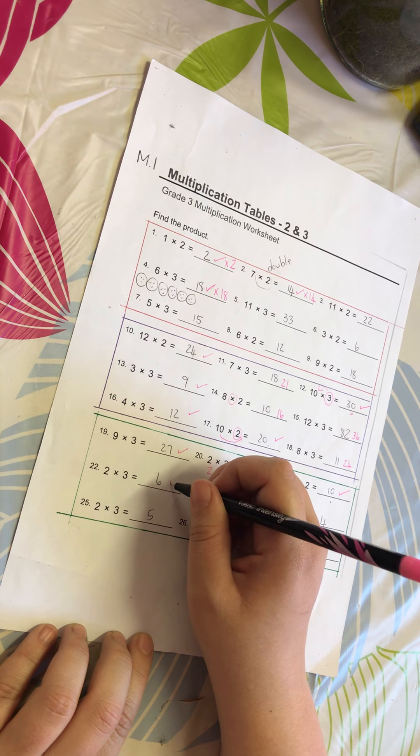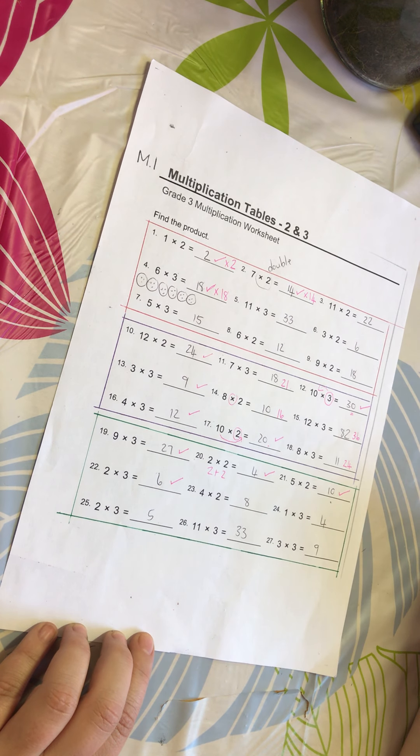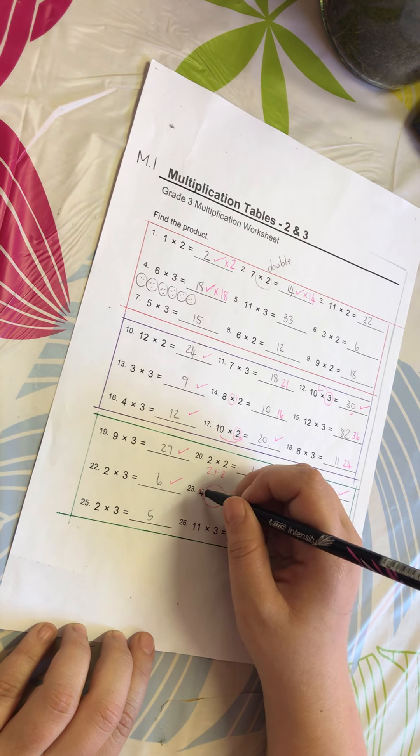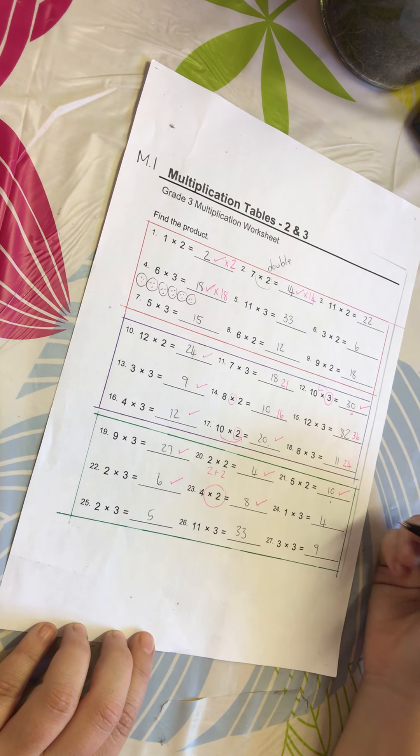Number 22: 2 times 3 is 6. Number 23: 4 times 2 is 8. Remember, times 2 is double. Double of 4 is 8, 4 plus 4 is 8.